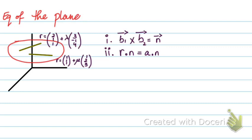Over here, we have two line equations, right? So we cross the two direction vectors to find the normal to the plane and then we use any of the two given points of the lines and r dot n equals a dot n to find the equation of the plane.